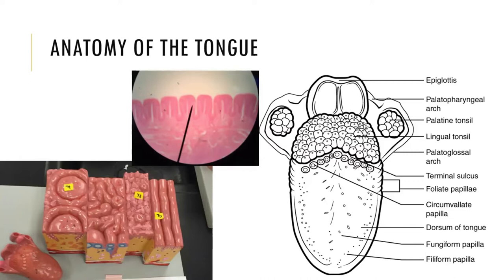Within our tongue we have taste receptors — specialized epithelial cells in sensory structures we call taste buds. We actually have more than 10,000 taste buds when we're young, and then as adults we have a little bit less over time. By the age of 50, we have less than one third of the taste buds that we started with.